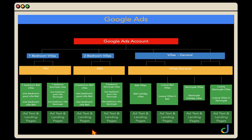The structure we want to use is called the one keyword theme method. Google search campaigns are built on the goal of matching highly relevant ads with highly relevant search terms, which then take people through to highly relevant landing pages. In your Google Ads account you break things into different campaigns. Using the example of a villa resort in Bali, we'd have one campaign for one bedroom villas, a second for two bedroom villas, and a third for general Bali villa keywords.